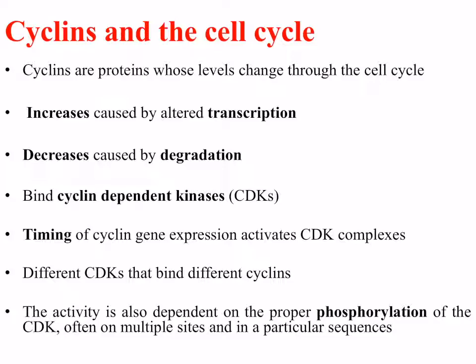Cyclins are key proteins to the cell cycle, discovered about 40 years ago. They are proteins whose levels change during the cell cycle — they increase by altering transcription, meaning the genes coding for cyclins are read, transcribed, and eventually translated. Different cyclins increase at different phases — G1, S, G2, and M — but they also decrease at different phases through degradation. These cyclins bind to particular proteins called cyclin-dependent kinases.